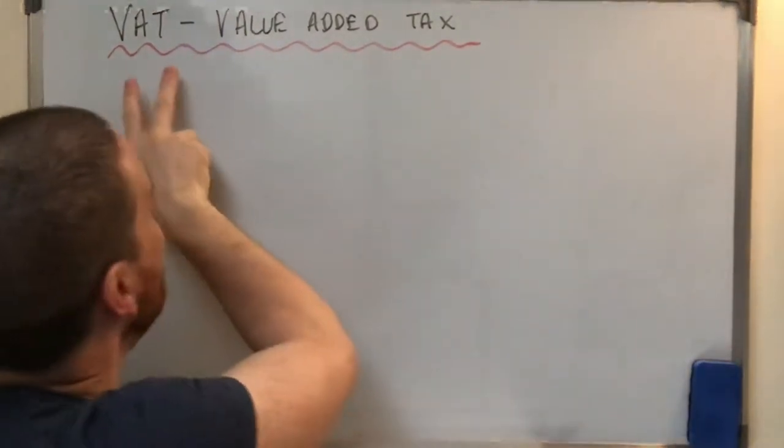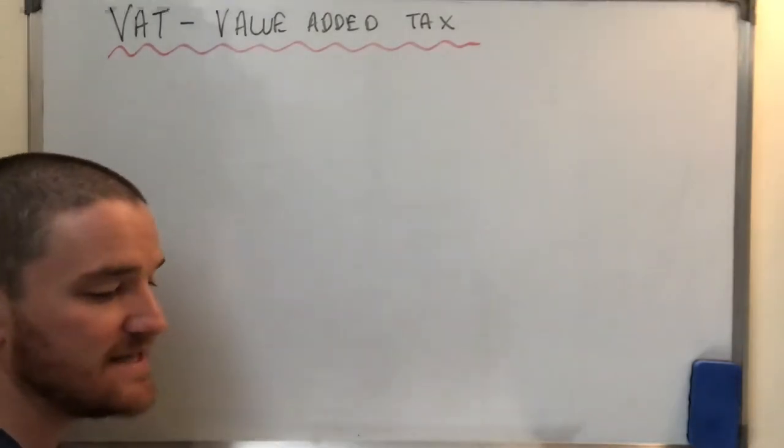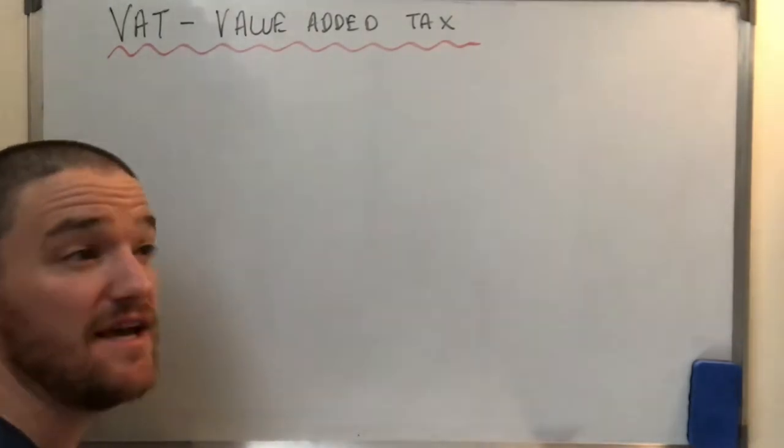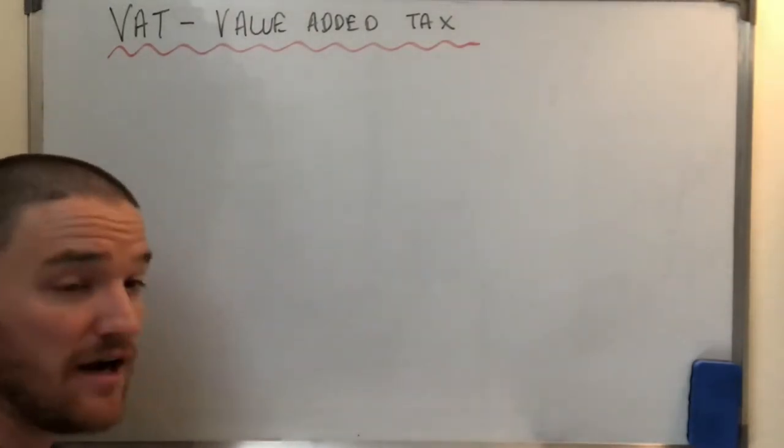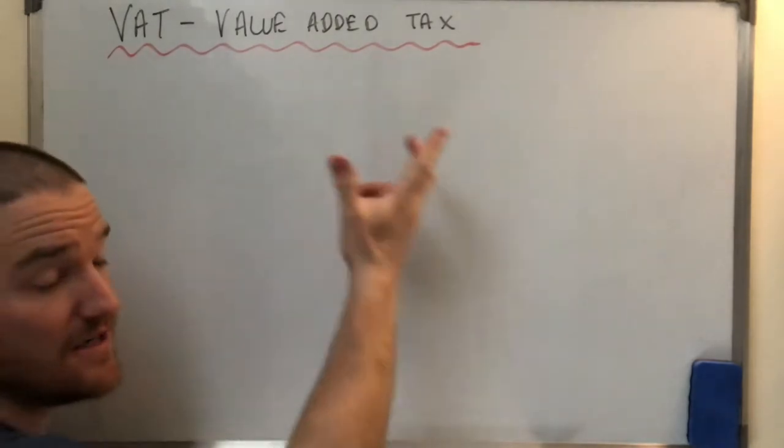Okay, we're going to take a look at VAT. This is value-added tax. So VAT is basically added on to goods and services. So if you buy a cup of coffee, it includes a VAT charge in Ireland.